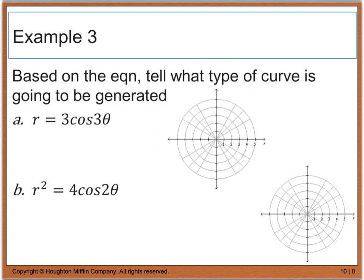For our last example, it says based on the equation, tell what type of curve is going to be generated. If we look at part A, it says that we have 3 cosine of 3 theta. This follows the general formula of a rose curve. And because this number, n, right there, is actually an odd number, I know that I will have three petals. And if you graph this, you'll actually end up with something that looks like this. Please test these out in your graphing calculator.